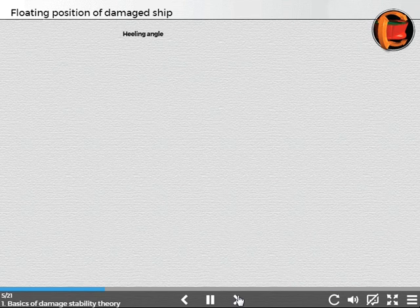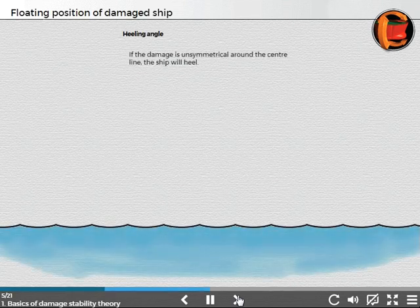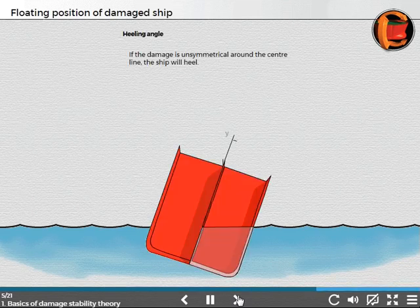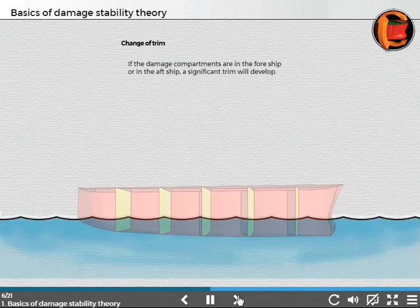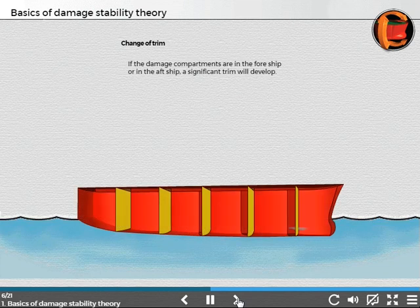Healing angle. If the damage is asymmetrical around the centerline, the ship will heel. Change of trim. If the damaged compartments are in the fore ship or aft ship, a significant trim will develop.